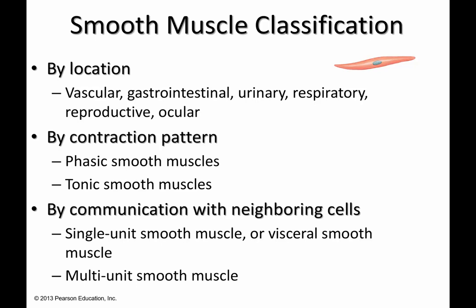Single unit smooth muscles act as a single unit — they contract together, with a single stimulus on one cell being passed to its neighboring cells via gap junctions. Multi-unit smooth muscles require each muscle cell in the tissue to receive its own independent signal to determine whether or not it is going to be activated during a contraction.